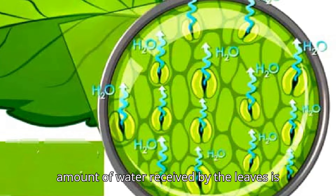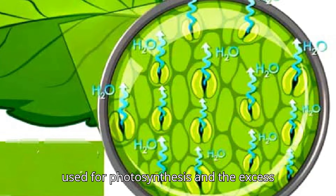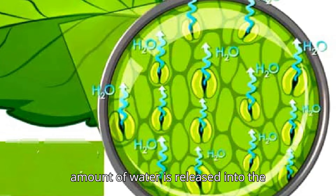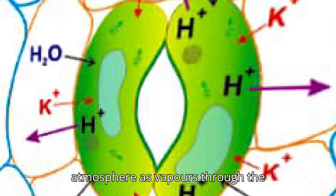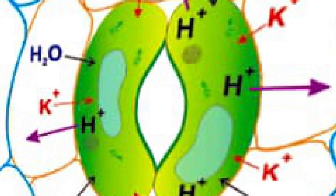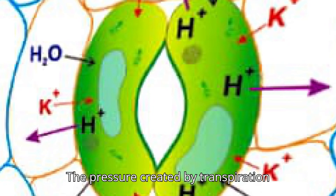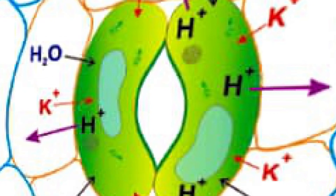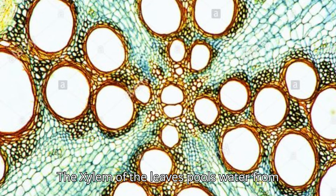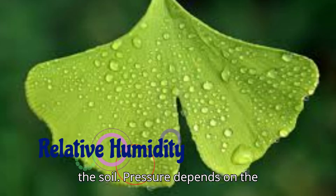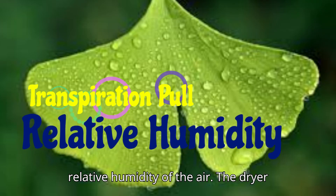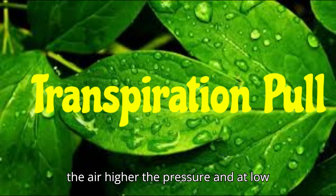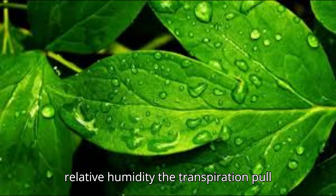The amount of water received by the leaves is used for photosynthesis, and the excess amount of water is released into the atmosphere as vapors through the openings in the leaves known as stomata. The xylem of the leaves pulls water from the soil. Pressure depends on the relative humidity of the air — the drier the air, the higher the pressure, and at low relative humidity the transpiration pull is low.